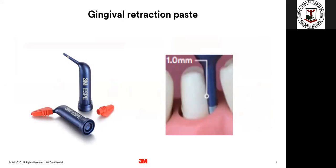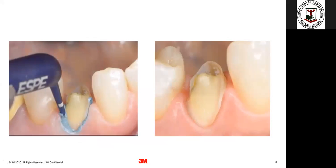Very recently, there has been an introduction of a gingival retraction paste — this is very similar in chemistry to Expasyl. This contains kaolin and aluminum chloride, which acts as a hemostatic agent. The best part is that the tip is very thin and very atraumatic. All you need to do is ensure the tip goes into the sulcus, inject the material around the sulcus — it's a blue paste — and leave it on for just two minutes. Within two minutes, this material absorbs moisture, expands, and allows for hemostasis. You wash it off and the gingiva has been separated away from the tooth for a small amount of time, and this is when you go in and record your impression.